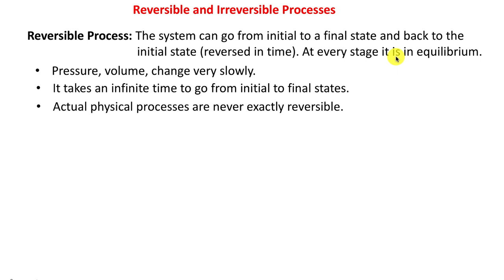This means the process is going very, very slowly — the pressure, volume, temperature, etc., change so slowly that at every instant of time the system is in equilibrium. This means it is going to take an infinite amount of time to go from the initial to the final state, and of course this means there is no such thing as a perfectly reversible process. Actual physical processes are in fact never exactly reversible.